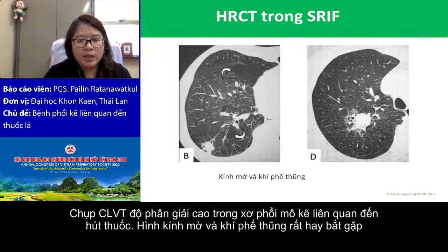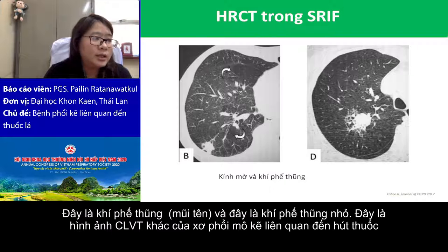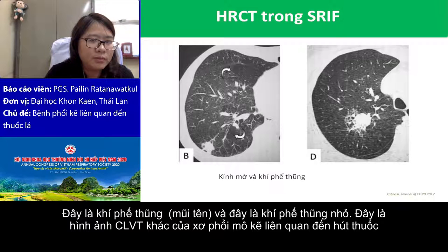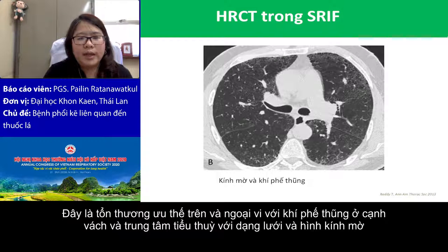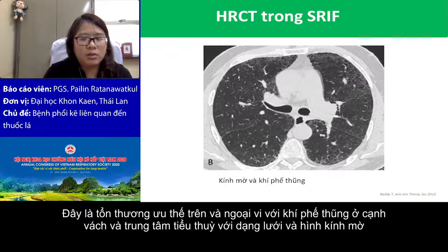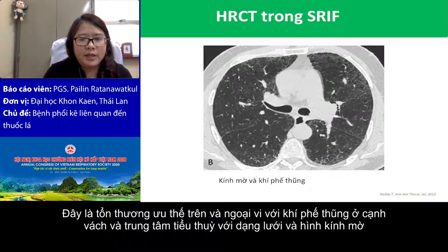This is the HRCT finding in SRIF. Ground glass appearance and emphysema are commonly seen. Here is the emphysema and here is a small emphysema, and this is ground glass. In another illustrative case of SRIF, there was upper lobe and peripheral predominance with patchy paraseptal and centrilobular emphysema with reticulation and ground glass appearance.